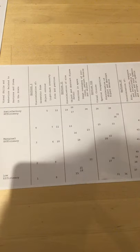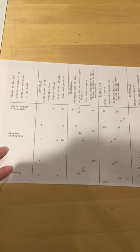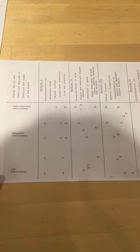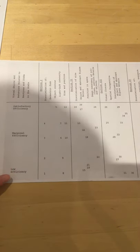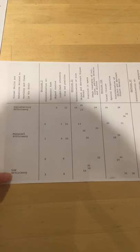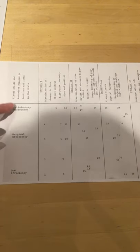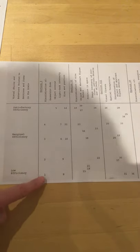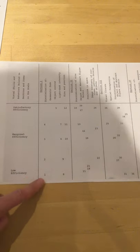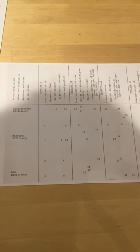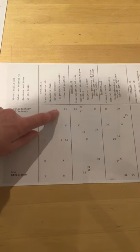The numbers here correspond to each question and in this column here on the left where my finger is at the bottom we've got questions that require low efficiency in these skills, marginal efficiency or satisfactory efficiency. So some of them are fairly easy like number one and number eight and then getting more complex, five and twelve are really the most challenging ones.